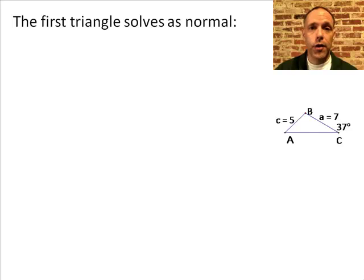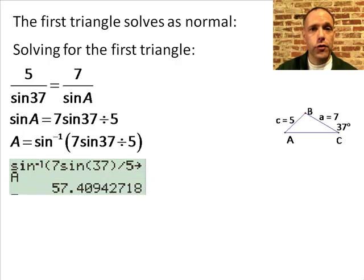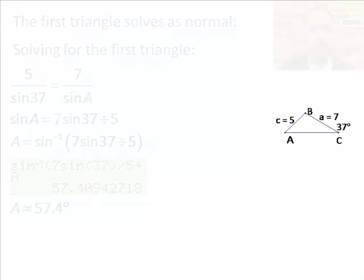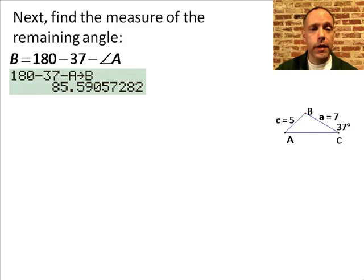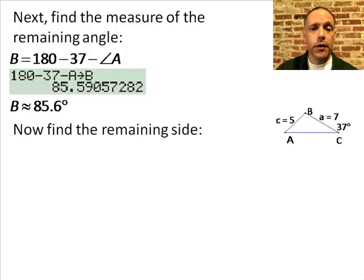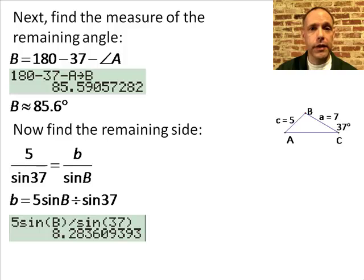The first triangle solves as a normal law of sines problem. Set up your proportion, solve for sine of angle A, then take the arc sine to find angle A — remember to store that in your calculator's memory. Angle A is about 57.4 degrees. To find the remaining angle, remember the three angles add up to 180, so angle B is about 85.6 degrees — store this in your calculator's memory. Set up the proportion again and solve for side b. Side b is about 8.3. So we have solved the first triangle.